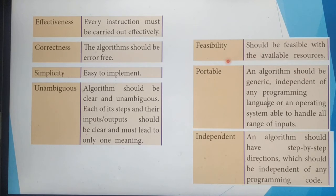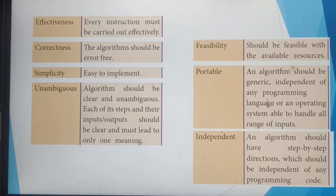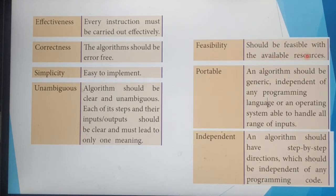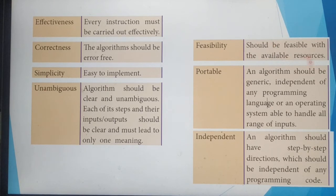The next characteristic is feasibility. Feasibility means the algorithm should be feasible with the available resources. Our algorithm should be implemented using available resources, which is called feasibility.